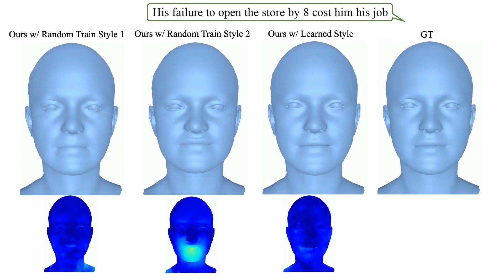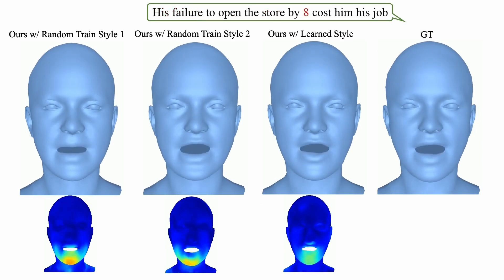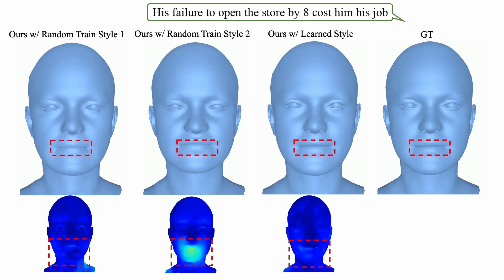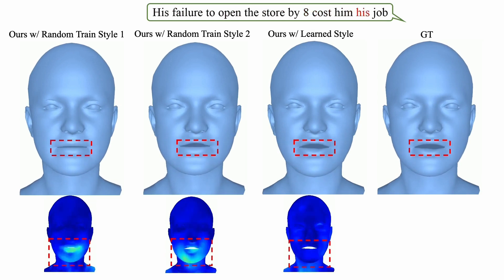Here you can see an example of speaking style adaptation. In comparison, we also show some random speaking styles from the Voca train set. His failure to open the store by 8 cost him his job. It is visible that a random speaking style produces muted expression and does not capture the person-specific lip geometry, which can be seen in the vertex error shown in the heat map below.